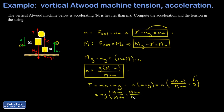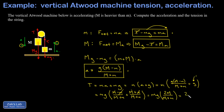Now that we have a common denominator, we add the numerators. We get 2M, and the negative m plus m terms cancel. This leaves mg times 2M over (M plus m), which simplifies to T equals 2Mmg divided by (M plus m). And we're done solving for both a and T.